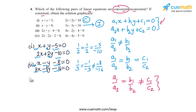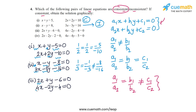The third pair is 2x + y − 6 = 0 and 4x − 2y − 4 = 0. Here a1/a2 = 2/4 and b1/b2 = 1/−2. Since these are not equal, a1/a2 ≠ b1/b2, which means the lines representing this pair will intersect and it will have a unique solution. So the third pair is consistent.